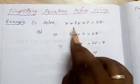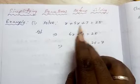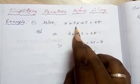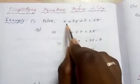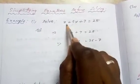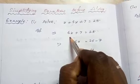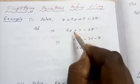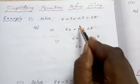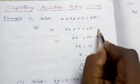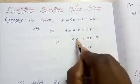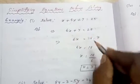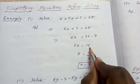Solve: x + 5x + 7 = 25. Here, x + 5x = 6x, so we get 6x + 7 = 25. Transposing +7 to the right side becomes -7. So the left hand side is 6x, and the right hand side is 25 - 7 = 18.